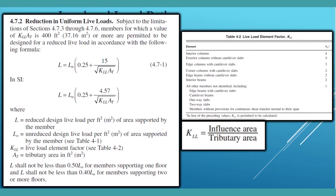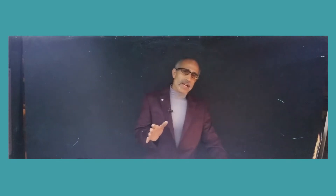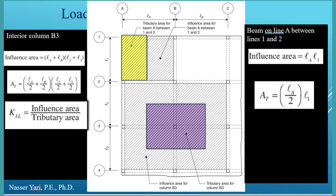Next, we look at the reduction in uniform live load. The formula starts with the initial live load confirmed from the table, then there is a factor called K_LL — the live load element factor — which is the influence area divided by the tributary area. The influence area is different from the tributary area: for a beam located between two points, the tributary area extends halfway to the next beam, but the influence area extends all the way to the other beam — a larger area.